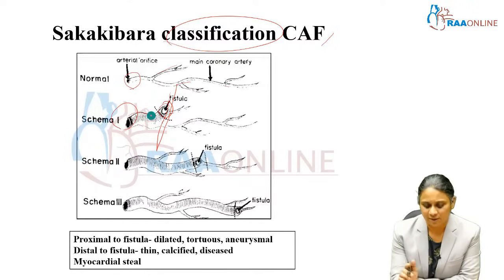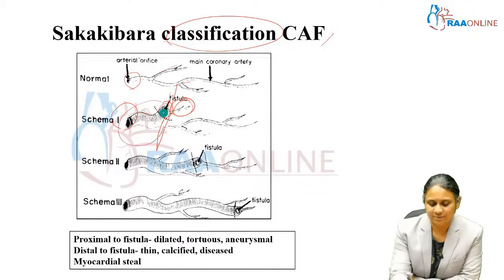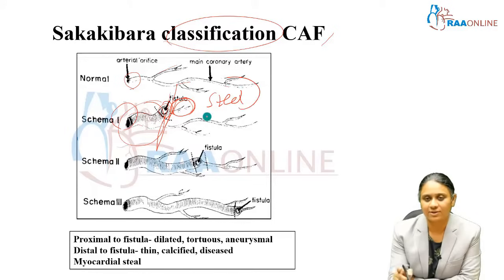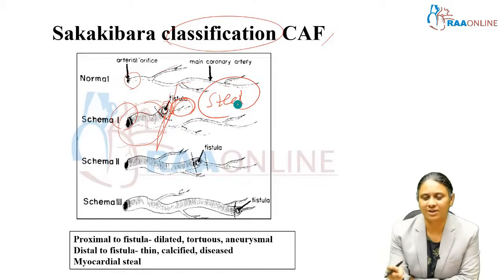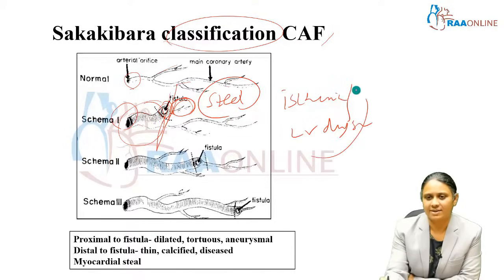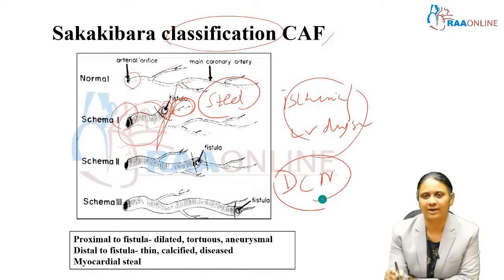The proximal portion of the fistula is dilated, tortuous, and abnormal, while distal to the fistula, even in the same feeding vessel, the vessels are small and may be diseased or atherosclerotic. This is because the proximal segment handles a larger volume due to shunting, while the distal vessel receives less blood, resulting in myocardial ischemia due to coronary steal phenomenon. This is an important presentation in children and infants with large coronary artery fistulas, presenting with ischemia or LV dysfunction, which must be differentiated from idiopathic or genetic dilated cardiomyopathy.